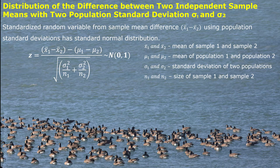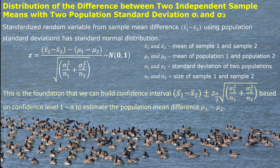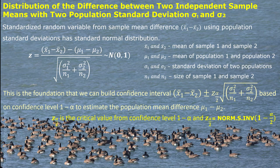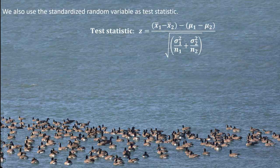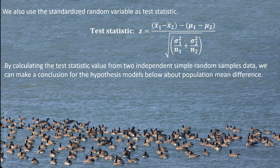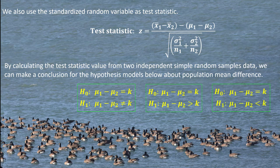It is a very similar idea, and we can build up a confidence interval. The difference of sample means would be the center. Similarly, the z critical value can be found from an Excel function. We can also use this z-test statistic by calculating the value from two independent simple random sample data to make a conclusion for the hypothesis about the population mean difference — either two-sided or one-sided.